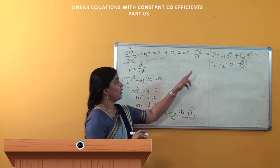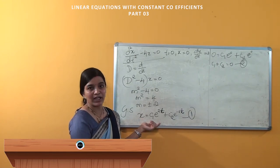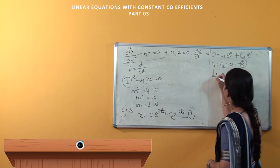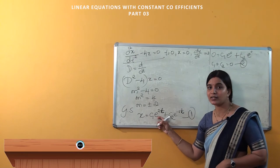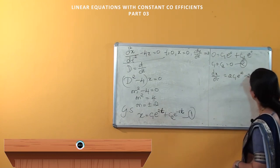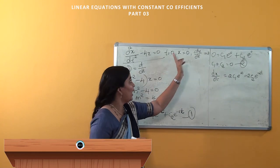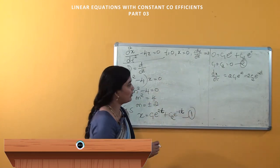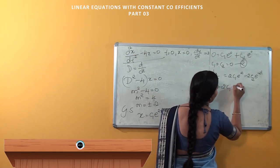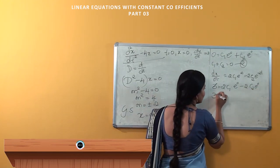The second condition is dx/dt = 3. Differentiating the general solution with respect to t gives dx/dt = 2c1·e^(2t) - 2c2·e^(-2t). Substituting t = 0 and dx/dt = 3, we get 3 = 2c1·e^0 - 2c2·e^0, which simplifies to 2c1 - 2c2 = 3. This is our third equation.